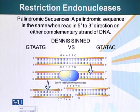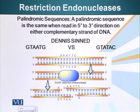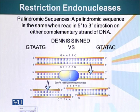I would like to point out a few things about these restriction enzymes. These enzymes cut a palindromic sequence. A palindromic sequence reads the same whether you read it from the 5 prime to 3 prime direction or the 3 prime to 5 prime direction. For example, the word 'Dennis Sinned' — if you read it from left to right it reads the same as from right to left. This is what a palindromic sequence is, and restriction endonucleases cut DNA at specific locations which are generally palindromic sequences.